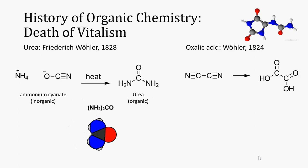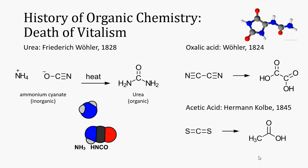In 1824, Wohler had reported the synthesis of another organic compound, oxalic acid, from another inorganic compound, cyanogen. The nail was put in the coffin, however, in 1845, when a different chemist, Hermann Kolbe, synthesized acetic acid from carbon disulfide.